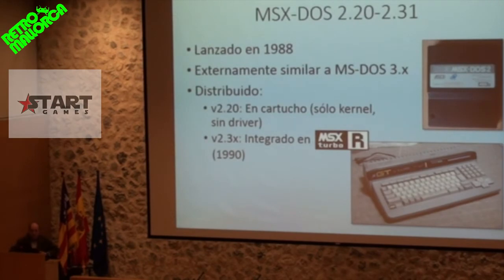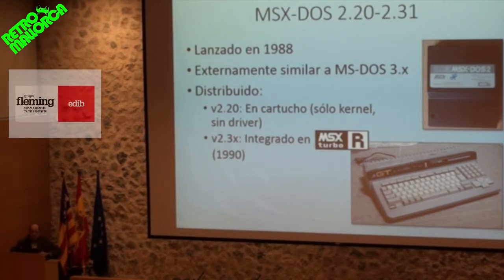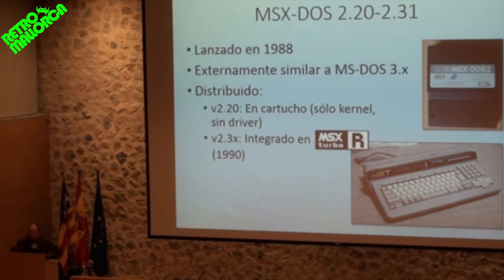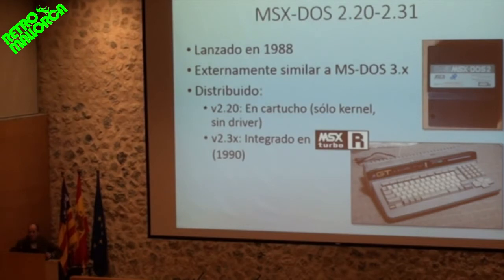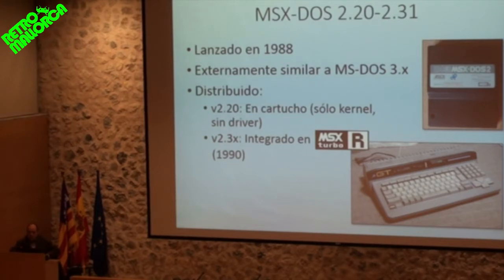Moving forward in time: in 1988 the people at ASCII decided the operating system was getting a little small, so they made a new version — launching version 2.20 in a cartridge. It was a cartridge that only had the kernel, with no device drivers. Later in 1990, together with the MSX Turbo R — the last generation of MSX computers produced — the kernel of MSX-DOS version 2 was also integrated, in this case version 2.30, which only had a few tweaks compared to 2.20.